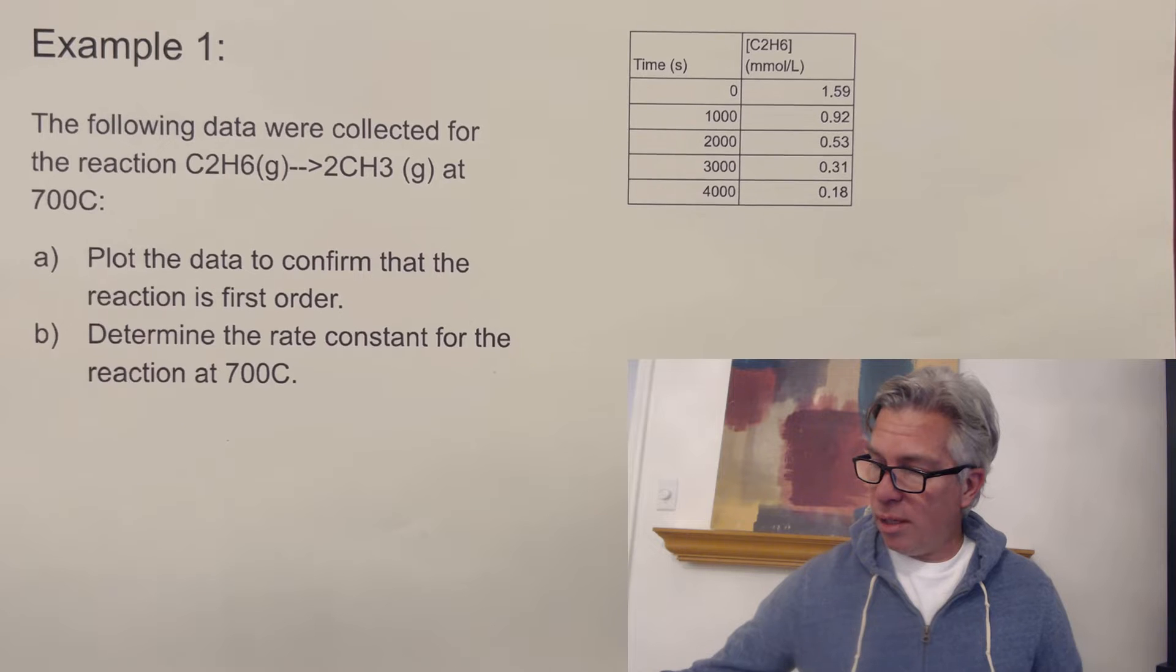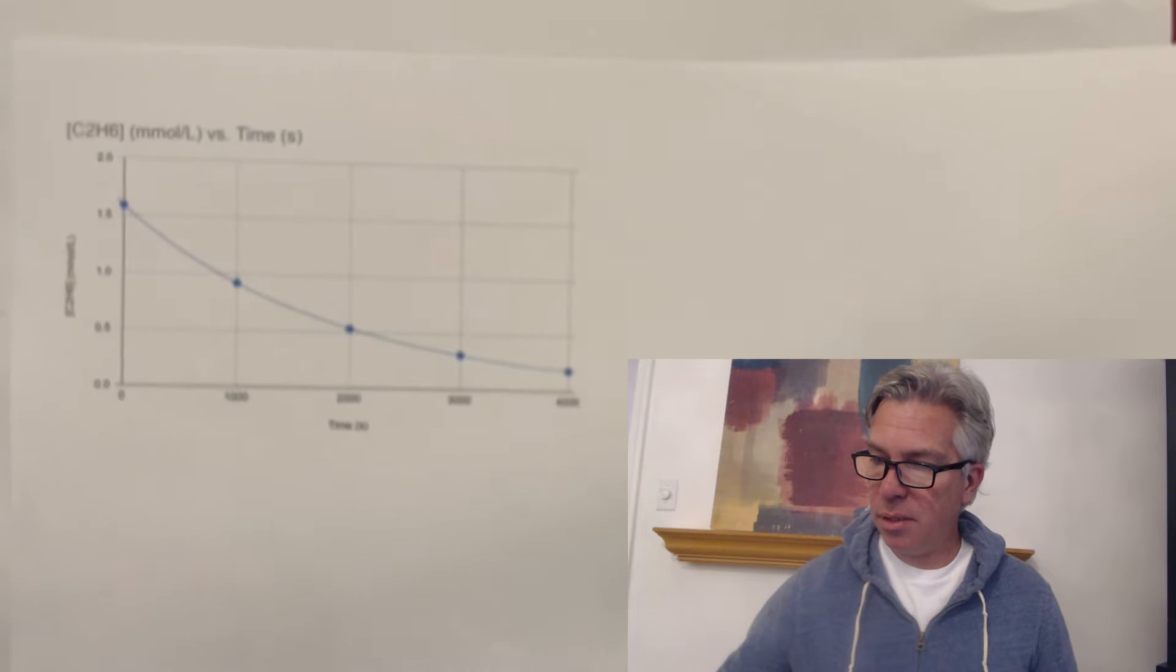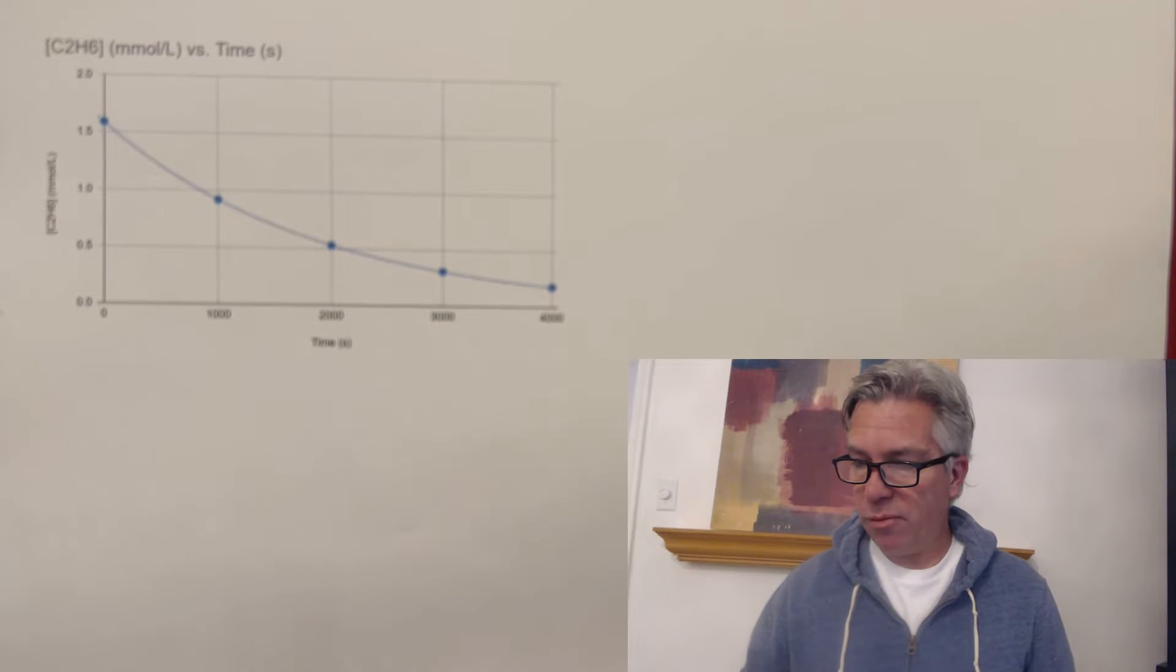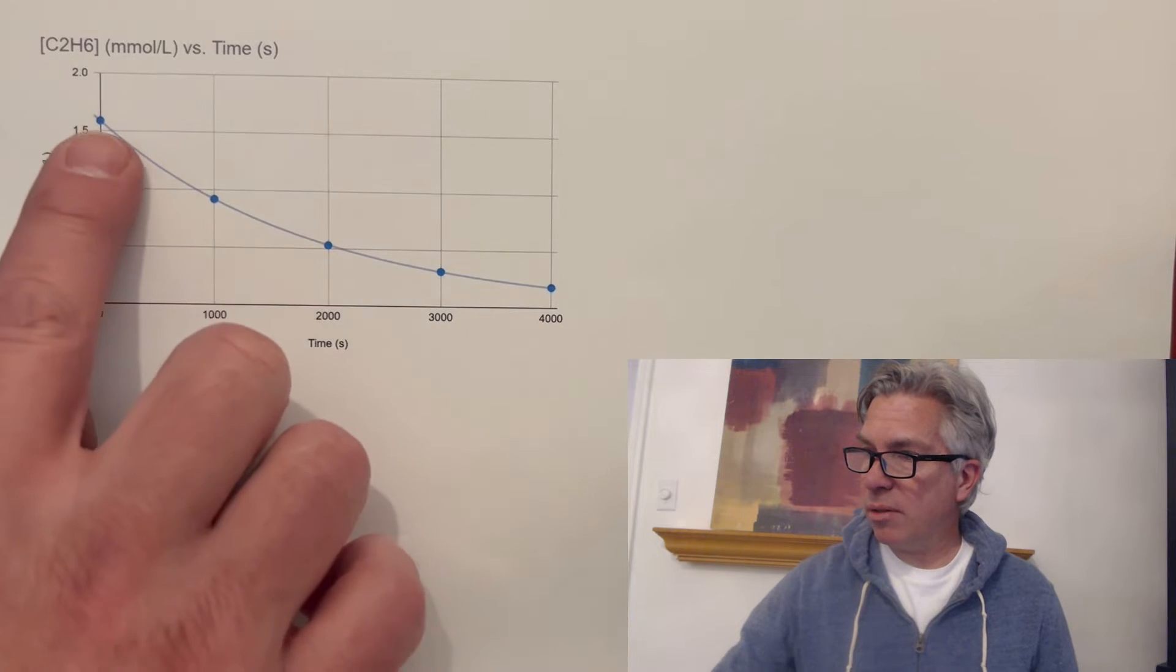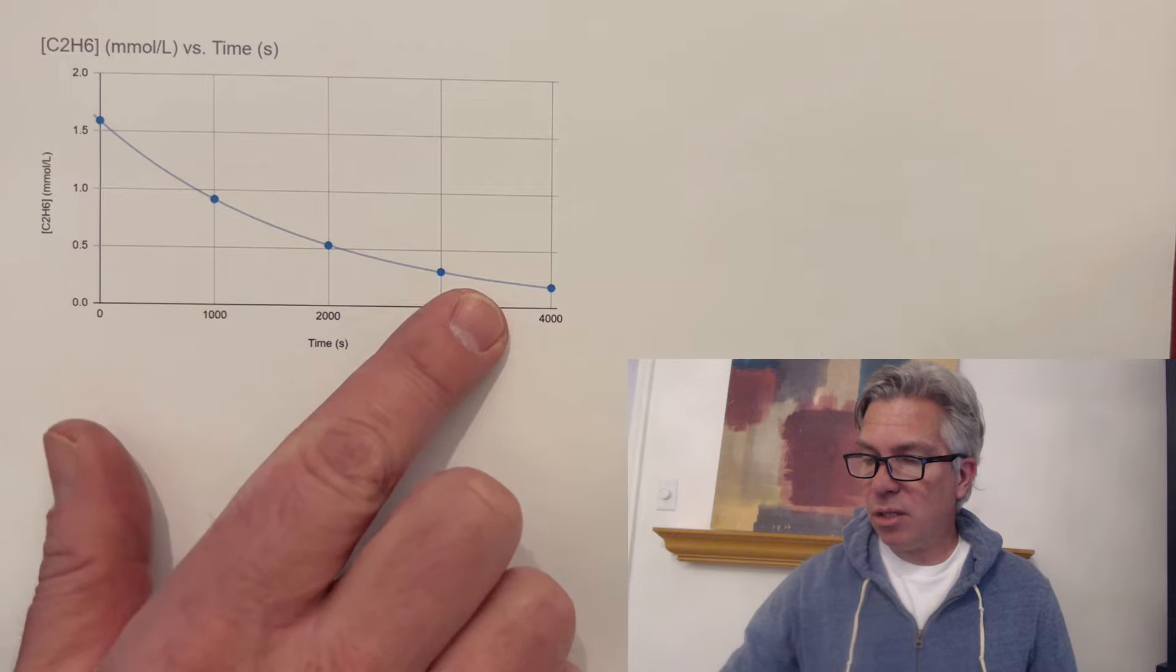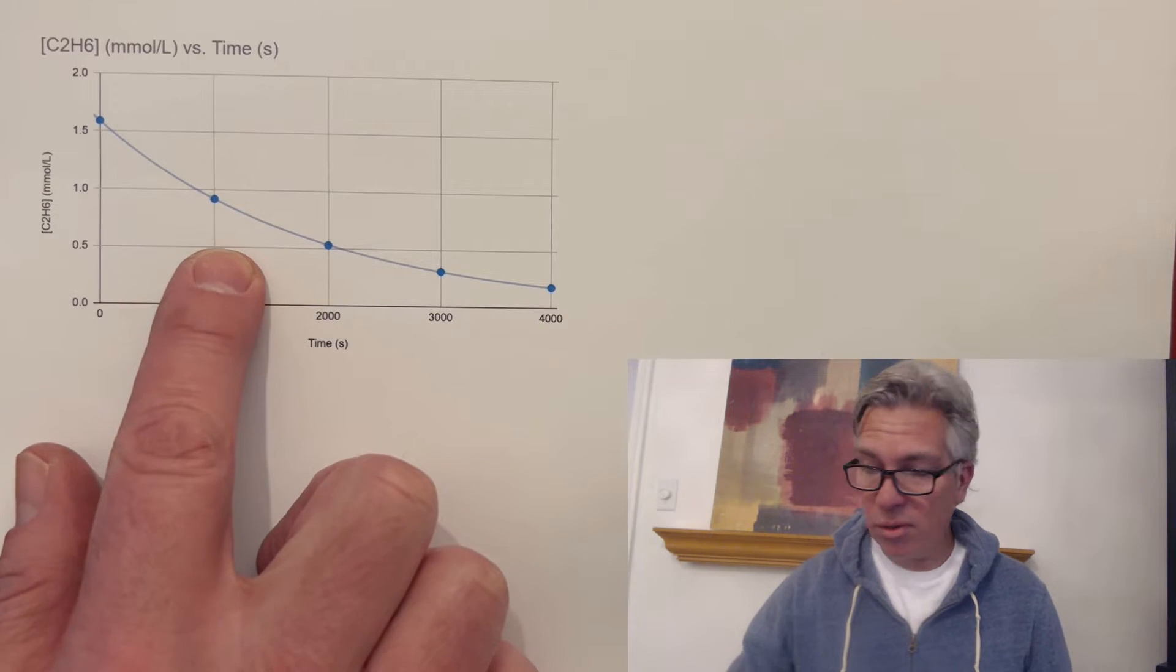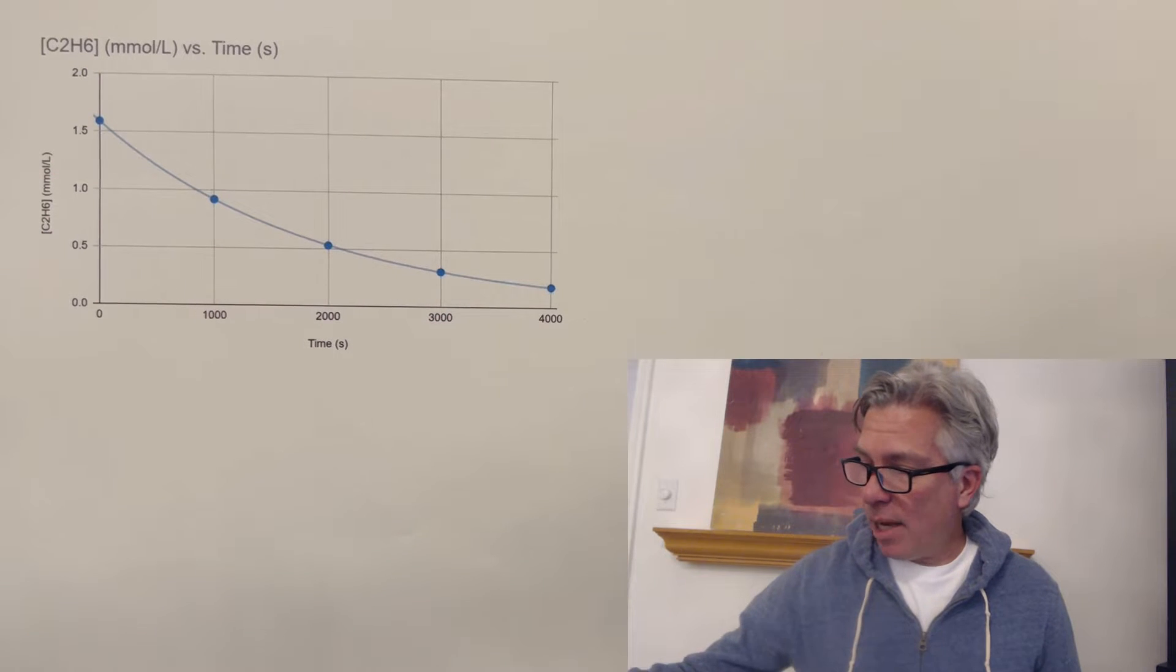So what I just did was to take that data, and first of all, I plotted it. And you'll see the plot that my spreadsheet made for me. And you can see it's definitely curved. It's first order. That's typical of a first order reaction because the rate slows as there's less reactant to work with, and there's less collision between those reactants. So it's slowing down.